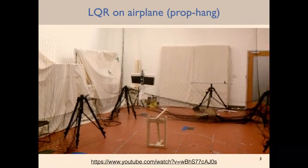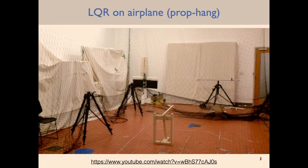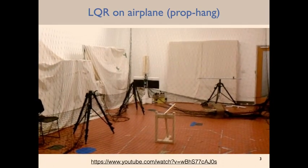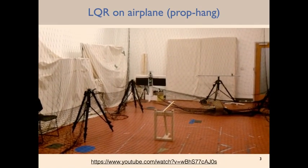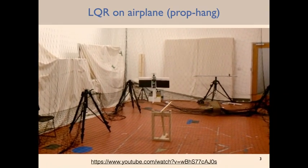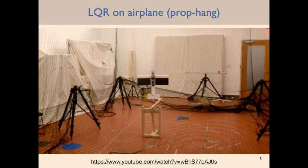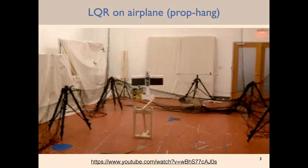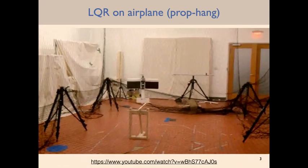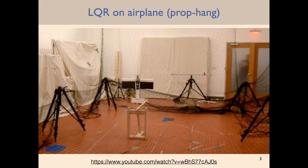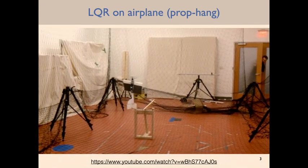Here's a different system — a more fun example. This is actually work I was involved with during my PhD. It's a fixed-wing airplane with a single — well, actually two counter-rotating propellers at the top — and it's doing what's known as prop hang, acting as a helicopter. It's using its wings, ailerons, rudder, and elevator to stabilize itself to this prop-hang configuration. This is a safety maneuver: if your drone is flying fast and there's a wall in front of it, you could transition to prop hang. This is also using an LQR controller.